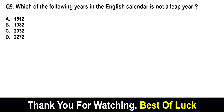Which of the following years in the English calendar is not a leap year? Options include 1900, 1912, 2032, and 2272. You have to identify which is not a leap year.